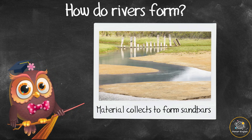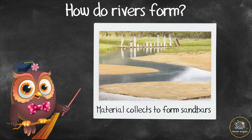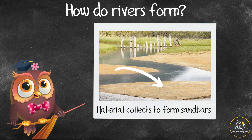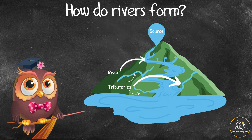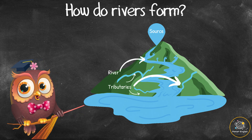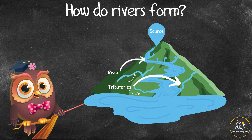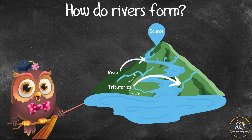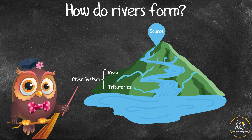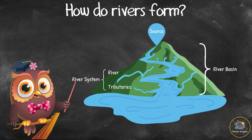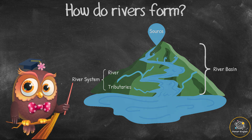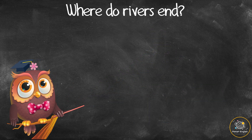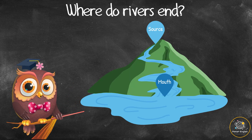When a river reaches flatter ground, it gets slower and larger. Some of the material it carries can sink and start to build up, forming sandbars and islands. All rivers have smaller streams that flow into them, which are called tributaries. A river and its tributaries make up a river system. The area that the river system covers is called a basin.